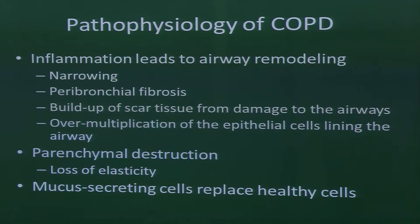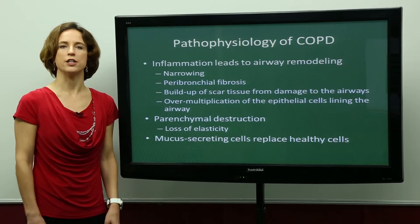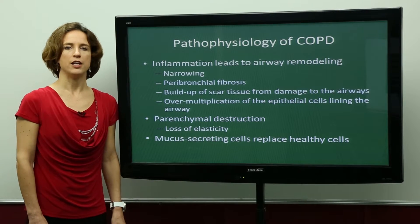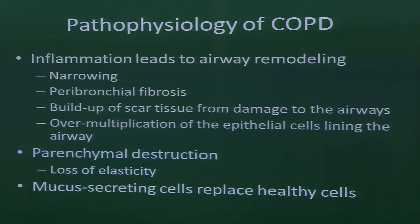There is also over-multiplication of the epithelial cells lining the airway. There is parenchymal destruction, which leads to a loss of elasticity, meaning that airways can't respond the way that normal airways would. Additionally, mucus-secreting cells — sometimes referred to as goblet cells — go on to replace healthy cells, causing the classic mucus overproduction seen in COPD, which leads to the chronic cough that many patients have.